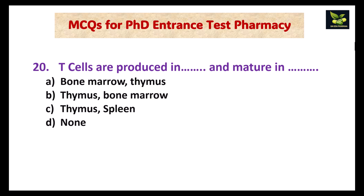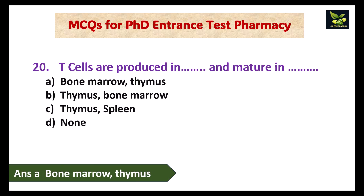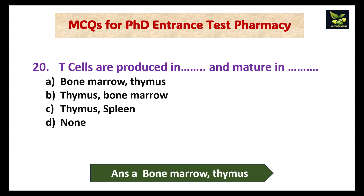T cells are produced in which organ and mature in which organ? The answer is they are produced in bone marrow and they mature in the thymus. So the answer is A.